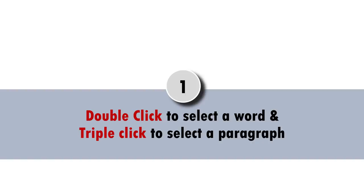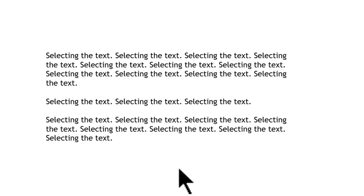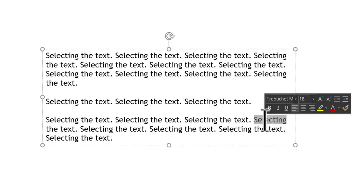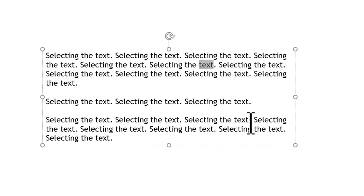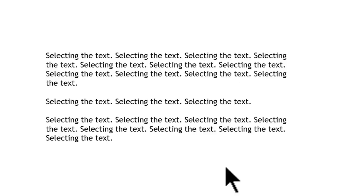The first trick is something that even experienced PowerPoint users don't know. The trick is to use double-click to select a word and triple-click to select a paragraph. Here is a slide with some text. I go here, double-click and that word is selected. It's very easy to select a word by double-clicking on it. Many times we tend to over-select or under-select whenever we use a simple cursor. Just by double-clicking, we are able to select a word very accurately.